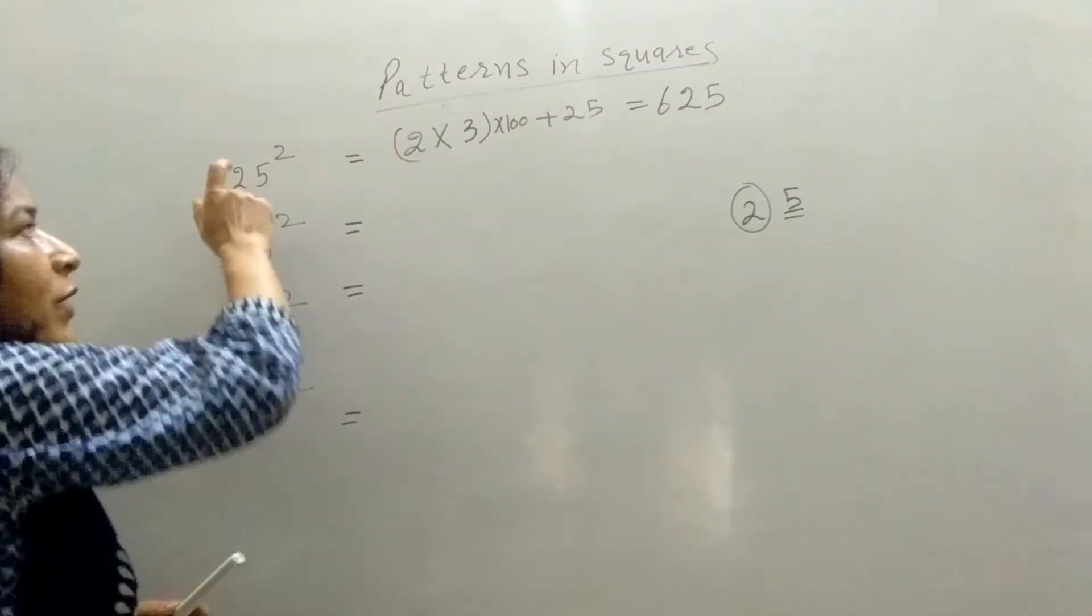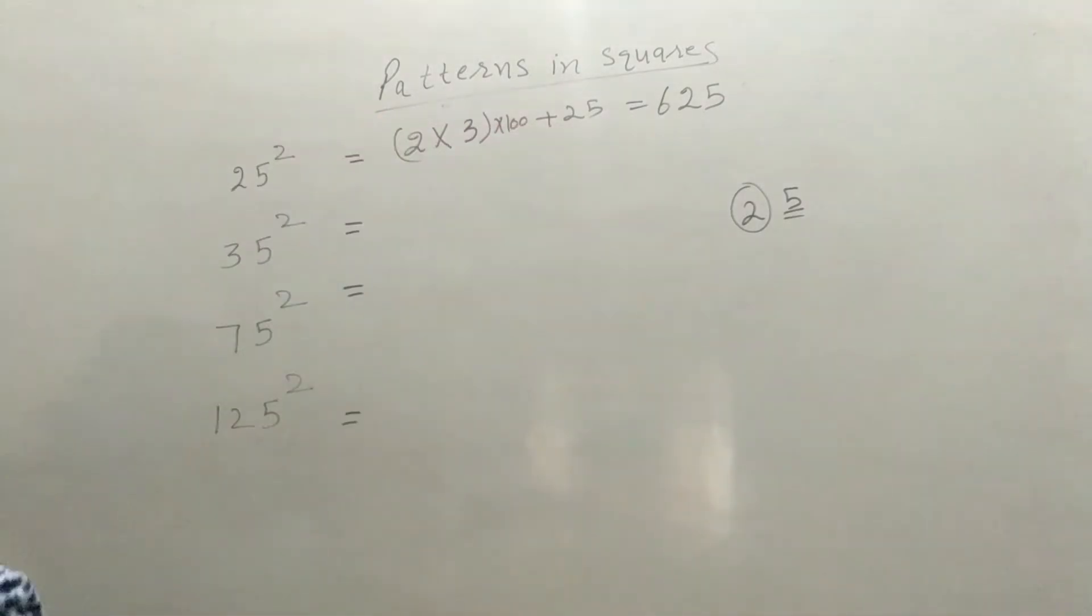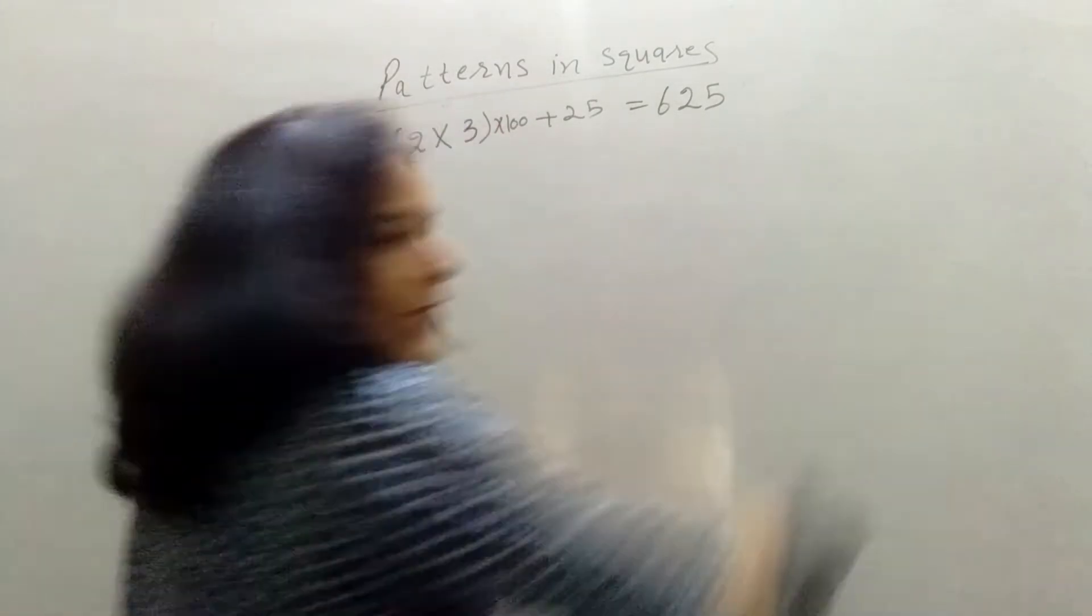You can verify: 25 into 25 is 625. Then check.